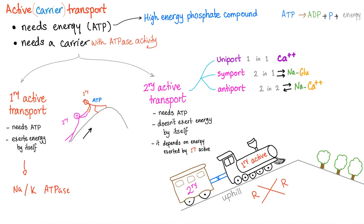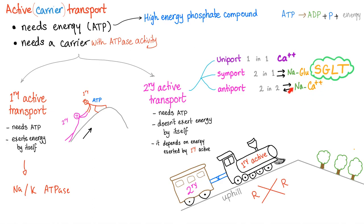Secondary active transport has three types. Uniport means one molecule in one direction, such as calcium uniport. Symport means two molecules in one direction, such as sodium-glucose symport, also called sodium-glucose co-transport. Third, we have the antiport — two substances in two opposite directions — such as the sodium-calcium antiport, also known as the sodium-calcium exchanger or sodium-calcium counter-transporter, which you see in the cardiac myocyte.